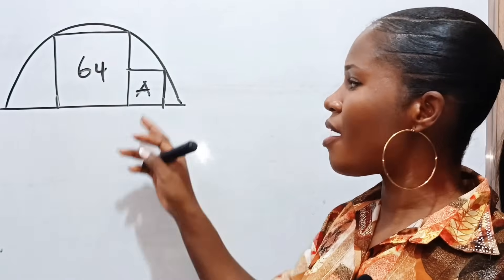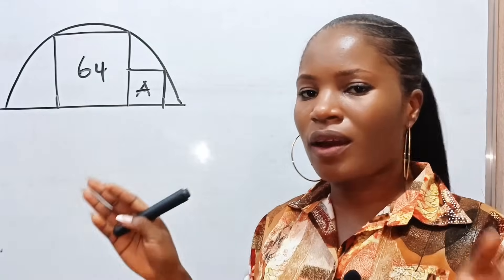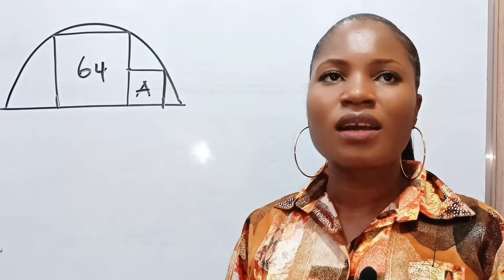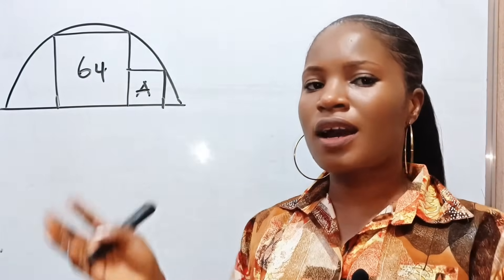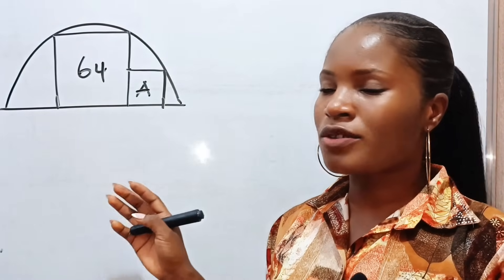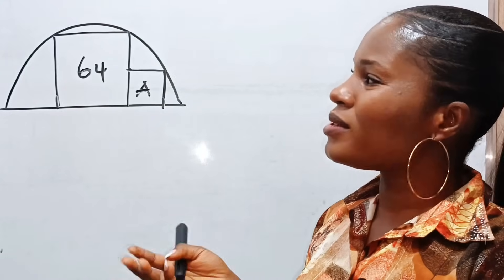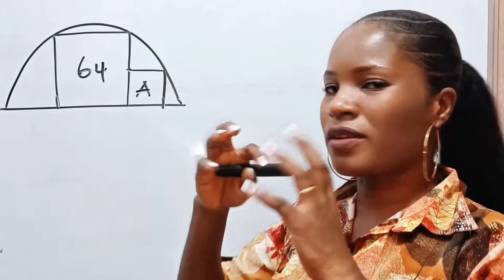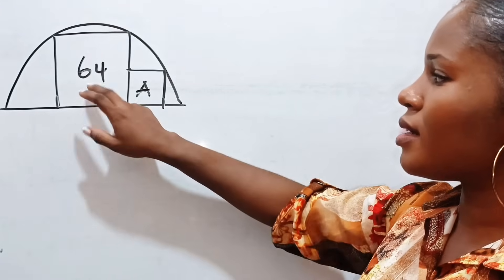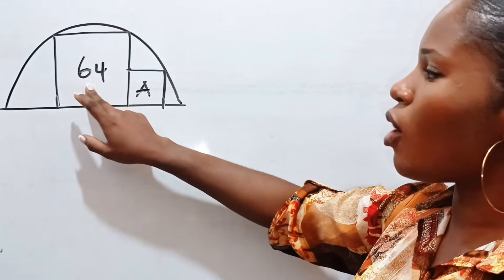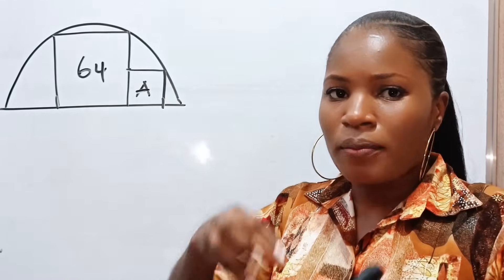We are told to find the area of this smaller square if the area of the bigger square is 64. Let's try to understand what the examiner is talking about — why would the examiner give us the area of a square? It shows that this is going to help us get the area of the smaller square, so we are going to start from that.